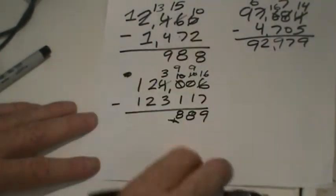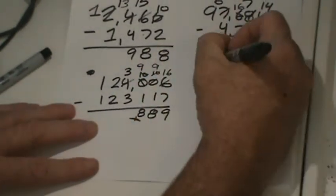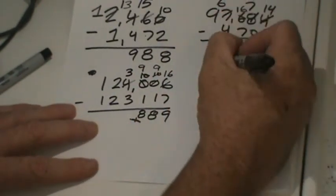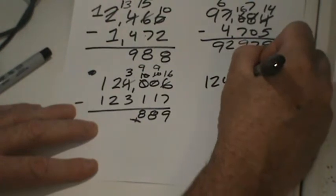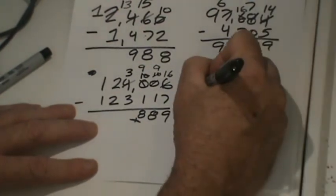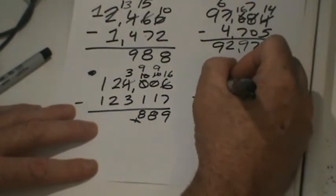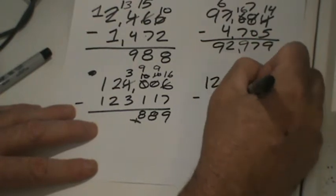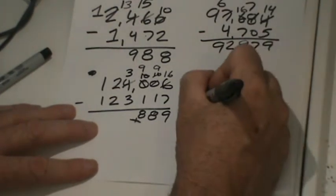Believe it or not, we added this and this and we would get that. I bet you believe it. We'll try another one: 124,060 less 31,117.